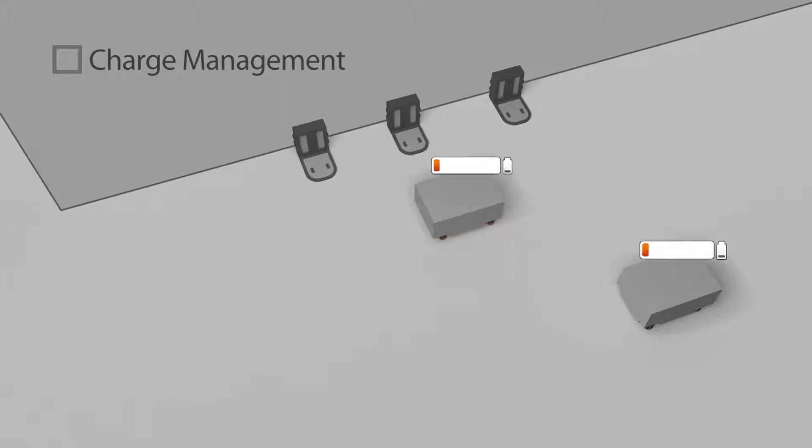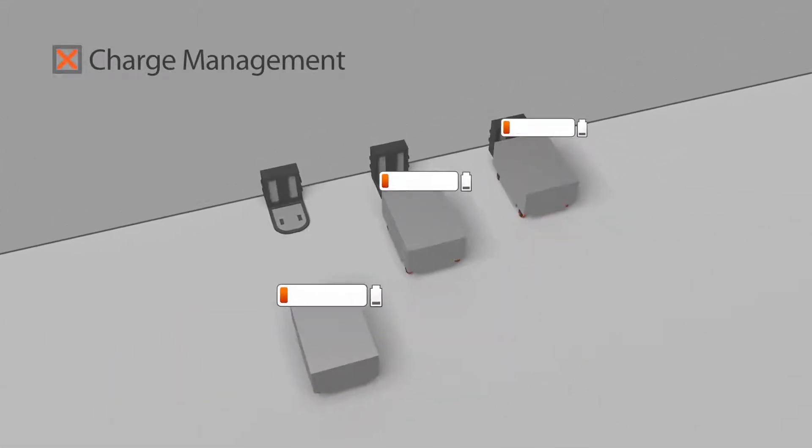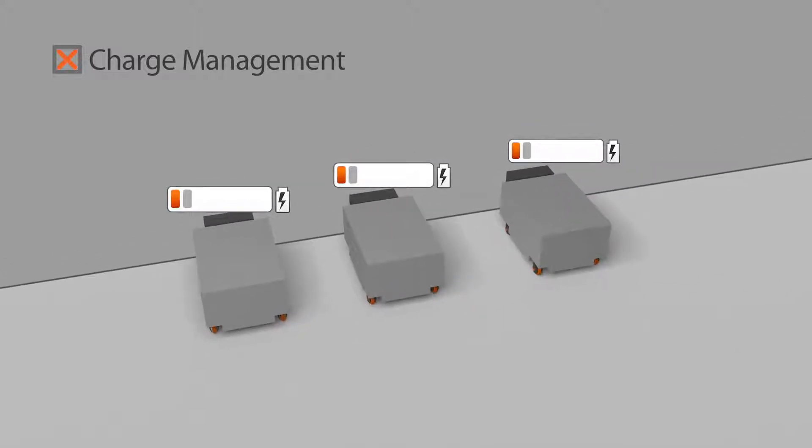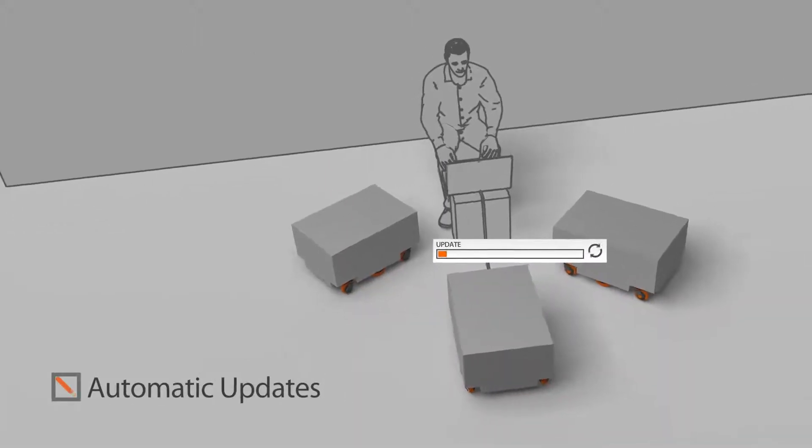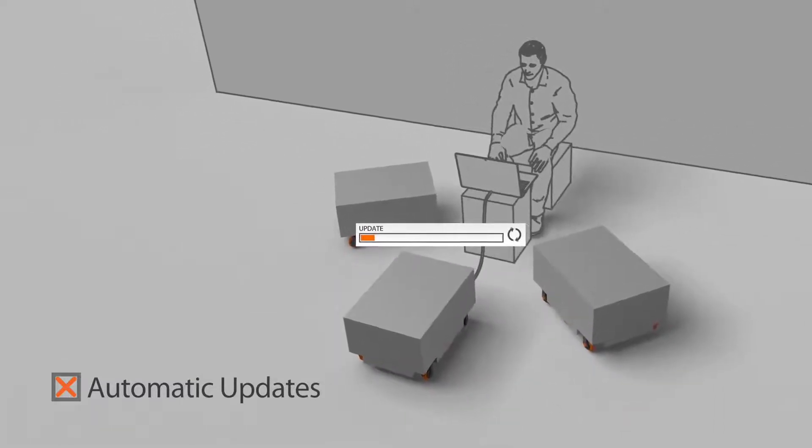Without Enterprise Manager, your entire fleet of robots can run out of power at the same time, bringing everything to a grinding halt as they all recharge together. And updating robots with new destinations and map changes can be a tedious and time-consuming process.